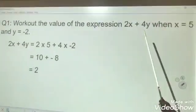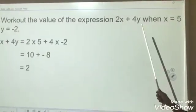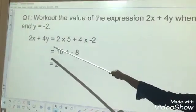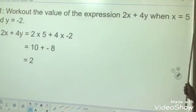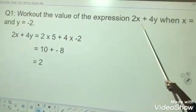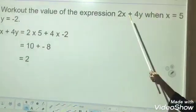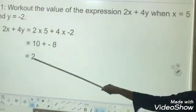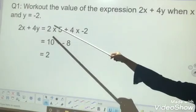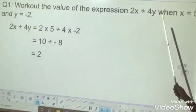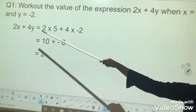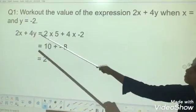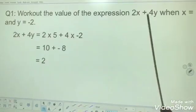Take the expression 2x plus 4y. Instead of x, what is the value of x? x is 5. So instead of x, put 5. What is the value of y? y is minus 2. So instead of y, put minus 2. That means you can see here, 2 multiplied by 5, instead of x put 5. Instead of y, put minus 2.